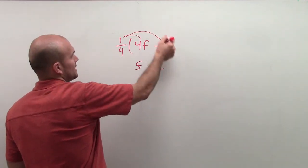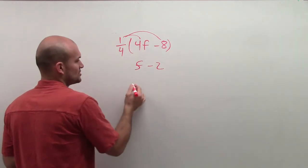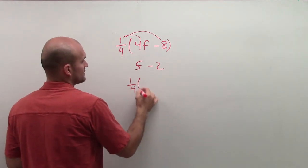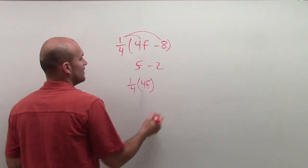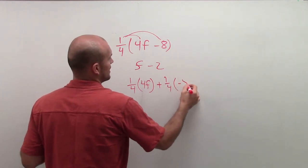So the main important thing, I need to apply distributive property, which states I'm going to multiply 1 fourth times both of these terms. So I have 1 fourth times 4f and then 1 fourth times negative 8.